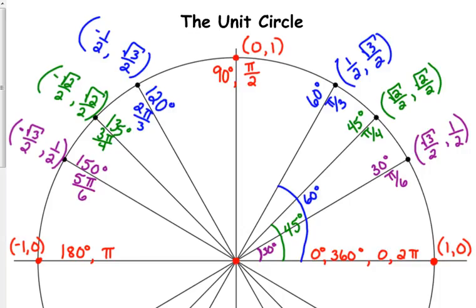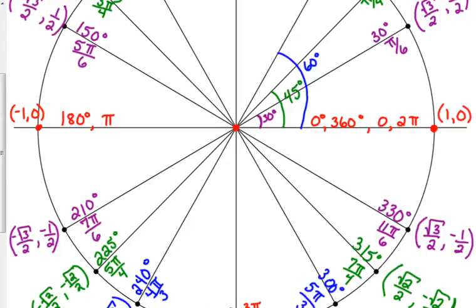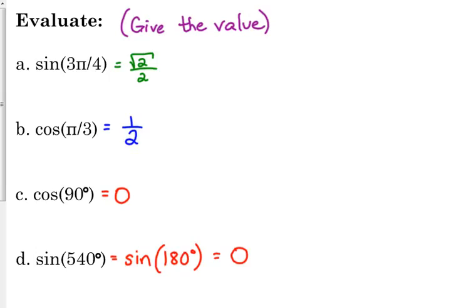7 pi over 6. 7 pi over 6 is in the third quadrant. It was the sine, so we want the y coordinate. That's negative 1 half.